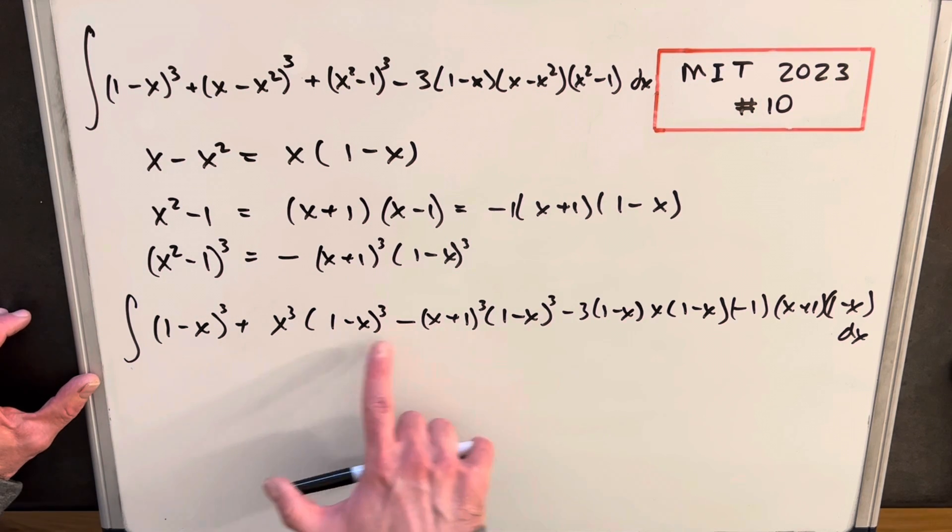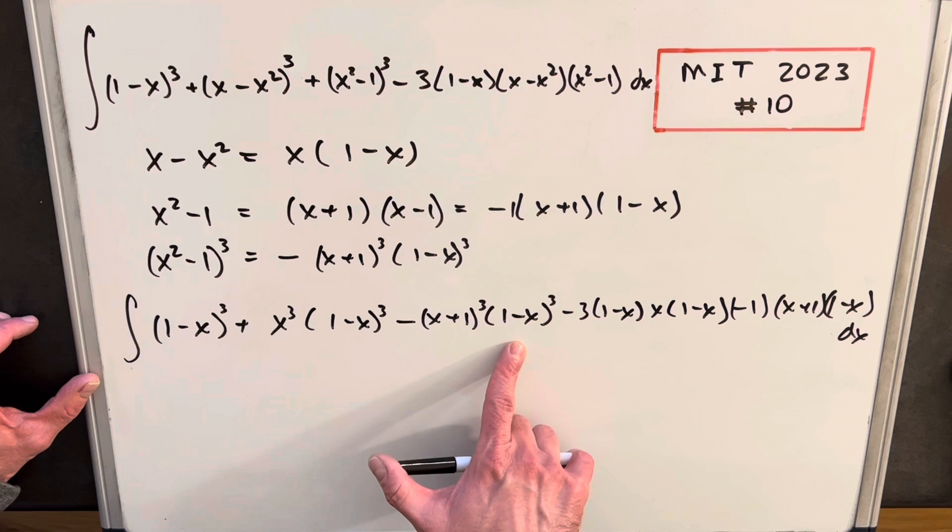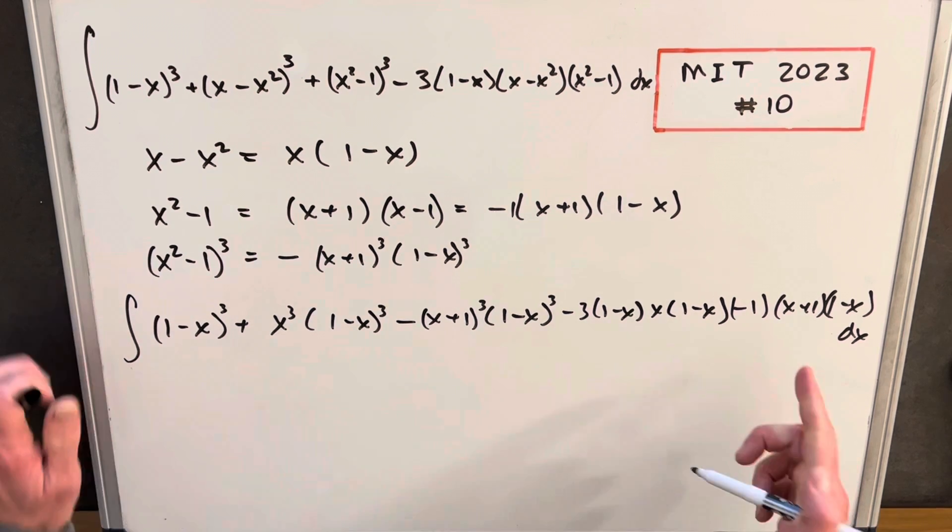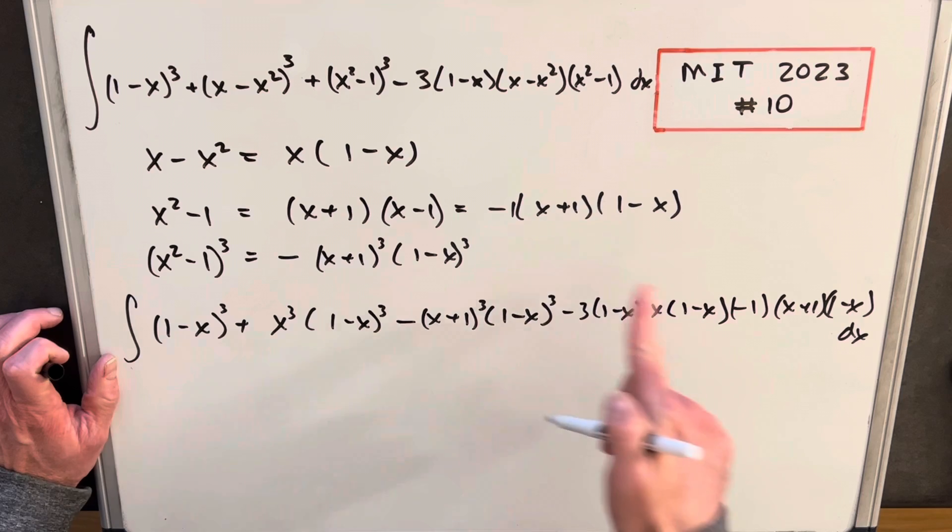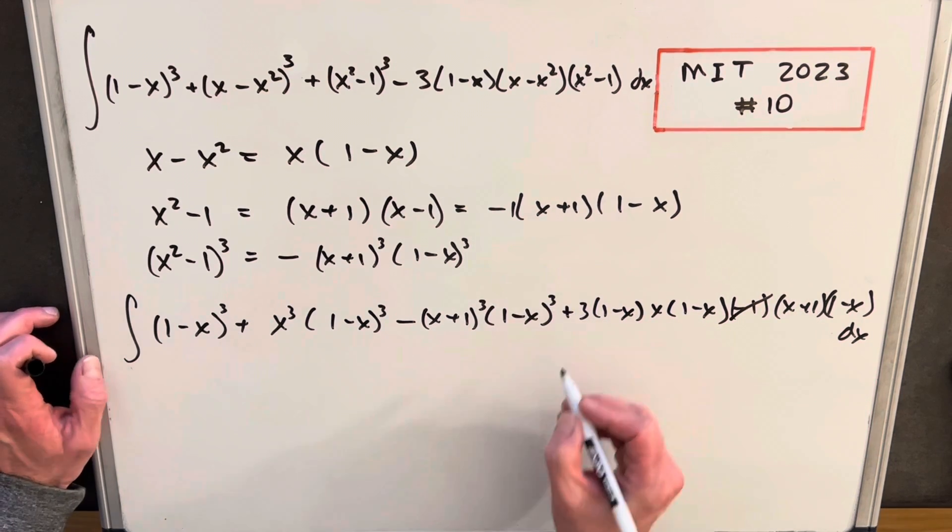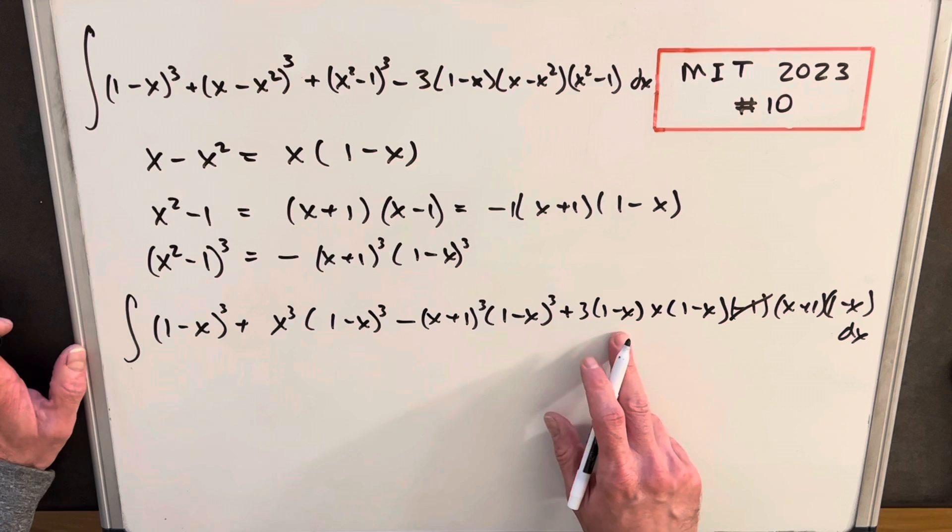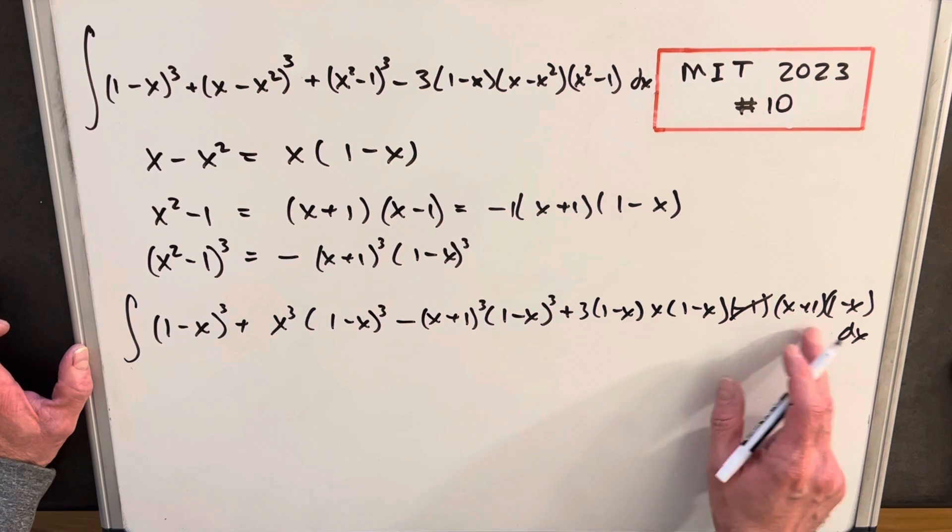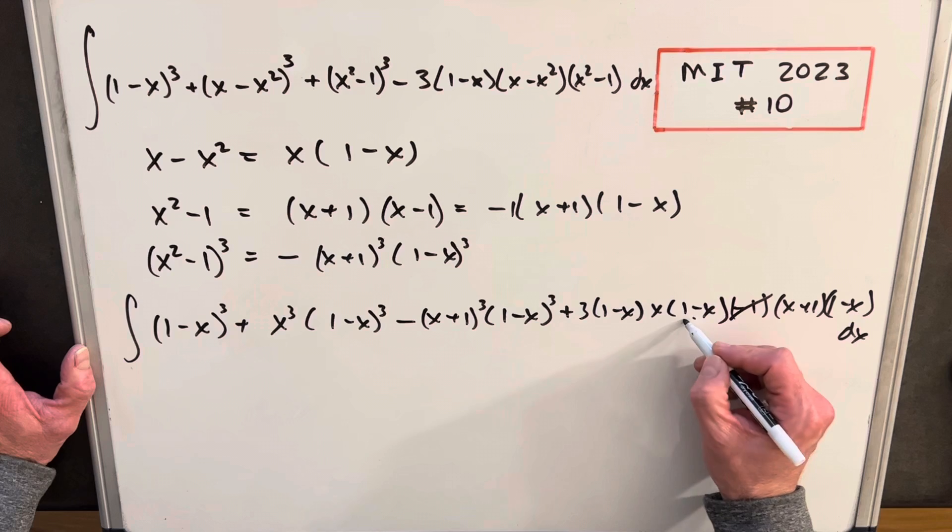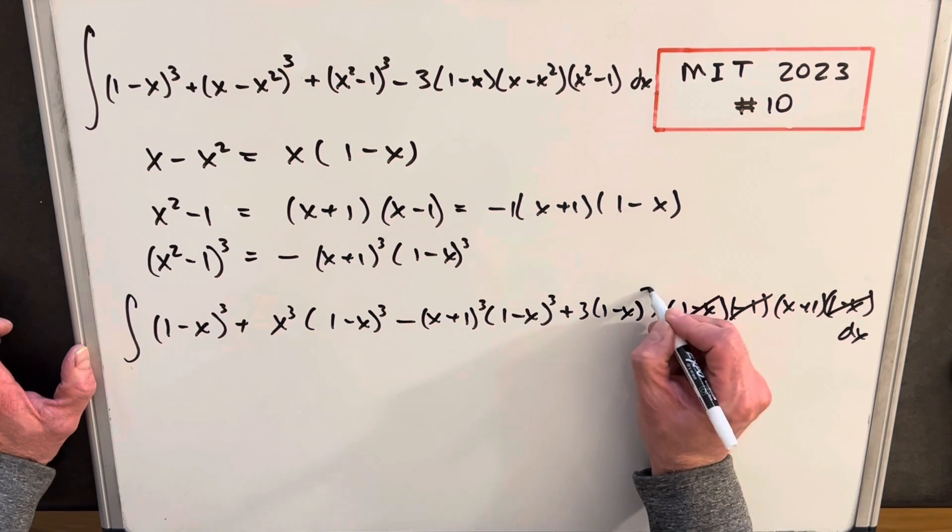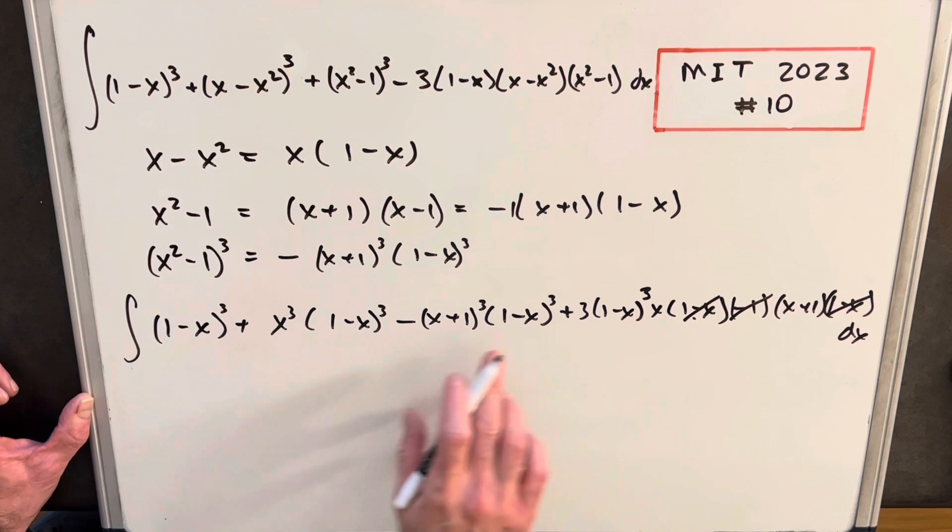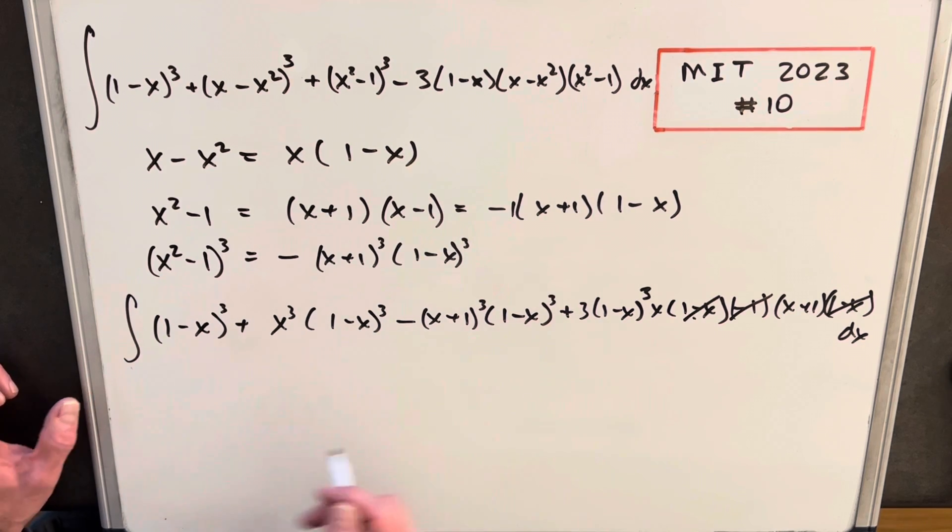And you'll notice we have 1 minus x cubed in these first three terms. But we have a bunch of 1 minus x's over here. What I'm going to do is we have this minus 1 that came from right there. I'm going to just take that out and make this a plus. And the other thing I want to notice, we are actually multiplying 1 minus x three times over here. What I can do is we can group those together and just write this as a 1 minus x cubed there. And what that's going to allow me to do is I can factor a 1 minus x cubed out of all four of these terms now.